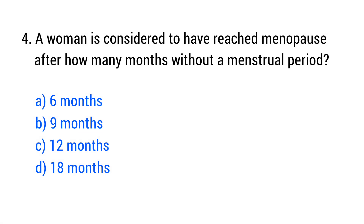Question number 4. A woman is considered to have reached menopause after how many months without a menstrual period? The right answer is option C, 12 months.